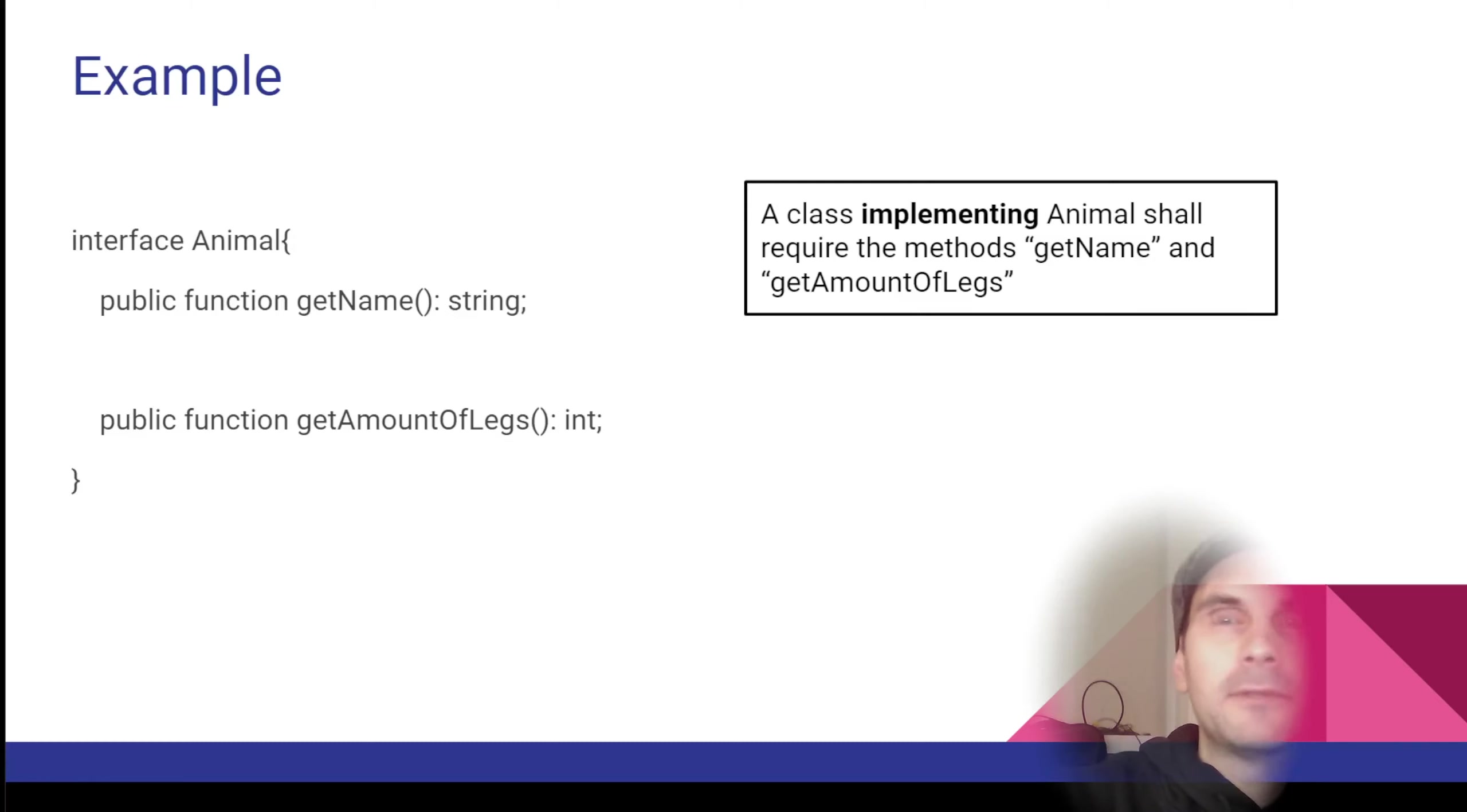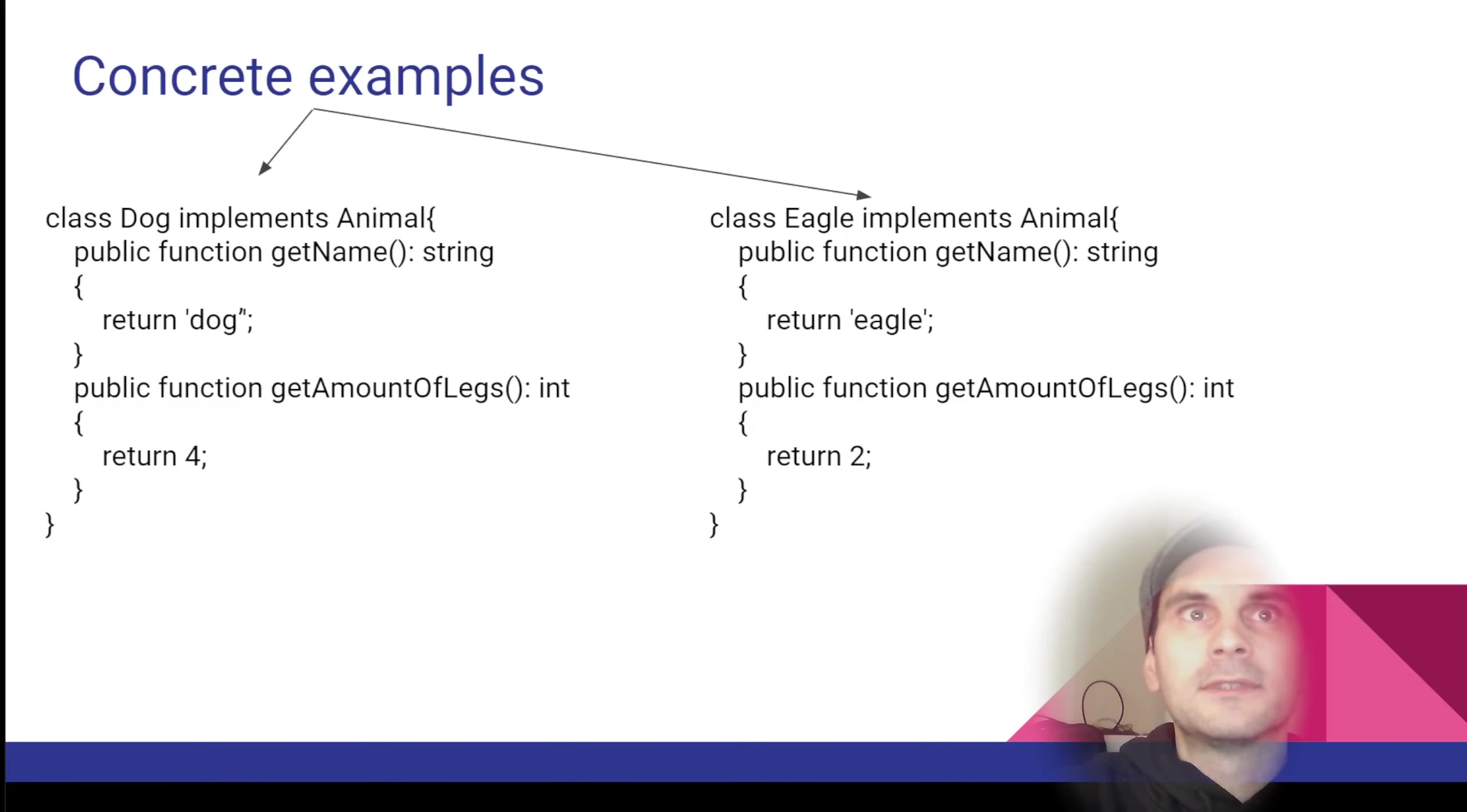Let's look at an example. So let's assume we have the interface Animal. And we say, okay, Animal has getName as a method and it returns a string, and it has getAmountOfLegs and it returns an integer. Now, this by itself doesn't do anything. So if we now imagine that we have two different kinds of classes, one is Dog and one is Eagle, and they both implement, look at the keyword, Animal, that means that they need to fulfill what your interface dictates them to fulfill.